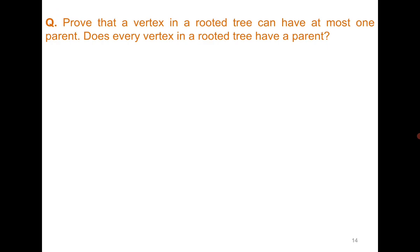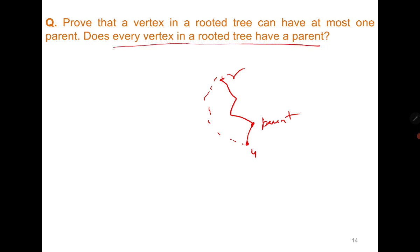Prove that a vertex in a rooted tree can have at most one parent. We use the property of a tree: for any vertex u there is only one path from u to the root r, and the parent is the first vertex on that path toward r. If there were more than one path, it would form a cycle, contradicting the tree property. The root itself has no parent; all other vertices have exactly one parent. The word 'at most' accounts for the root having zero parents.